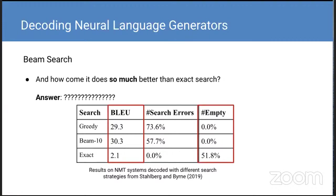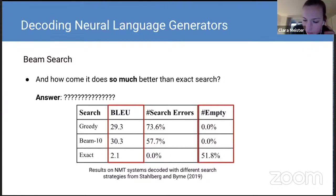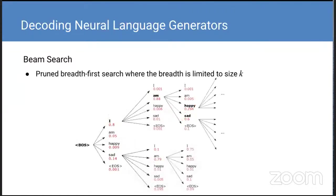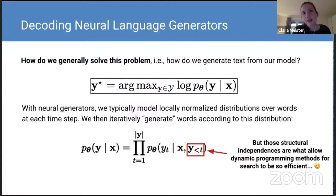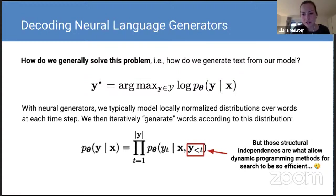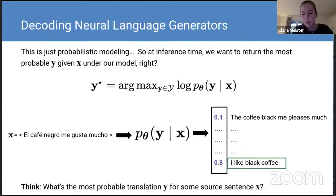Question from audience: "What do you mean by global optimum in this setup?" Clara: The global optimum means the most probable sentence under the model. We have this probability distribution and we're searching for the most probable sequence.